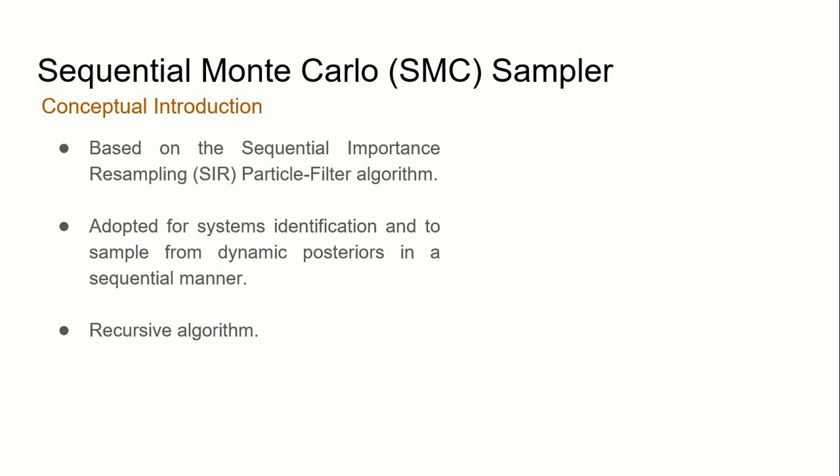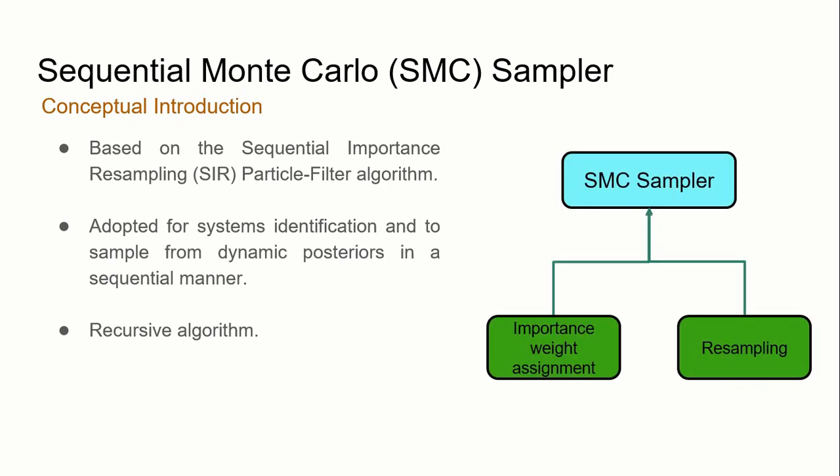Finally, a brief introduction to the Sequential Monte Carlo (SMC) sampler. It is based on the sequential importance sampling technique (SIS), also known as the particle filter algorithm, and is often adopted for systems identification. One advantage SMC has over TMCMC and MCMC is that SMC can generate samples from dynamic posteriors — posteriors which evolve with time — in a sequential and recursive manner.